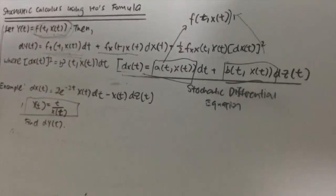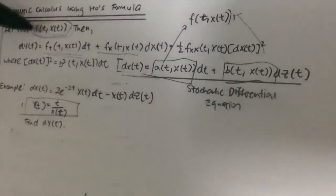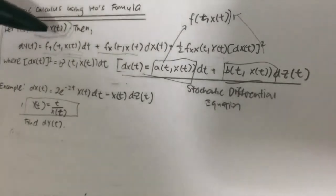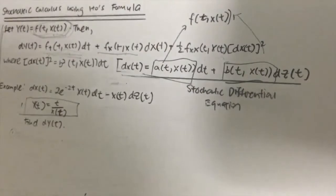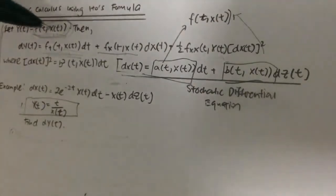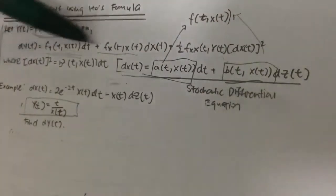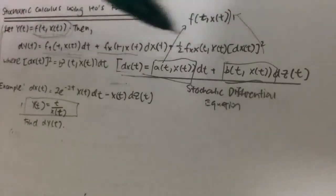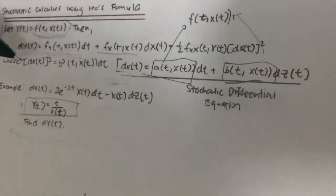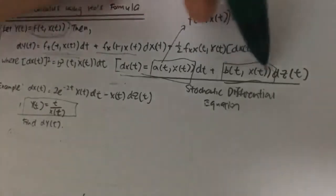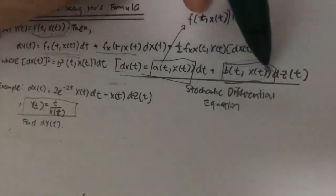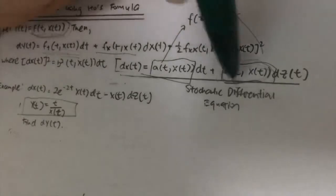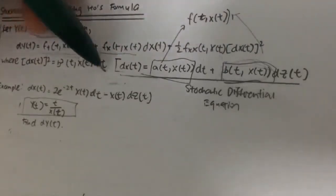Stochastic calculus using Ito's formula goes like this. Let yt be equal to a function in terms of t and xt, whereby xt itself contains your standard Brownian motion. Then this is the formula of your differential equation for yt. dxt squared is basically the square of the function in terms of t and xt, with a dt behind.